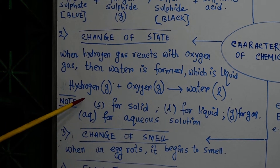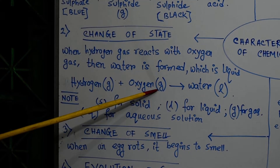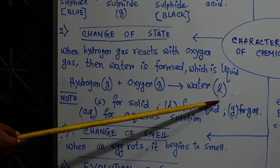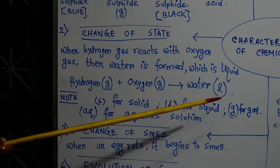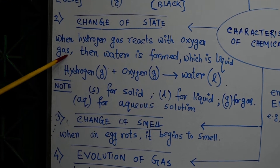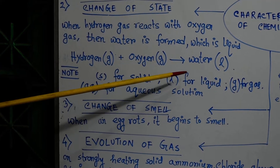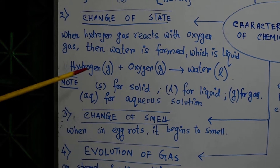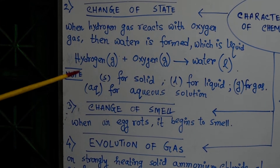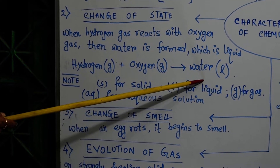The word equation will be: hydrogen (g) + oxygen (g) → water (l). That means the state on the reactant side is gas, but the state on the product side is liquid. So we can conclude that the reaction might start with a particular physical state and end up with another physical state.